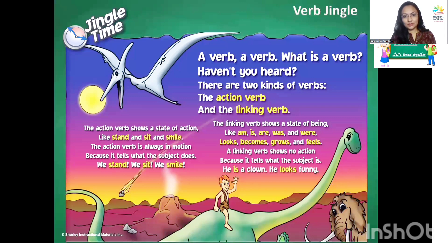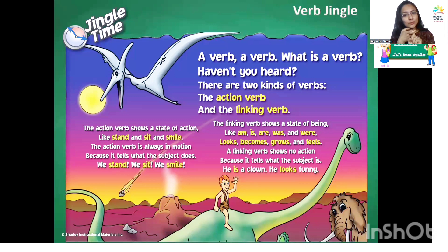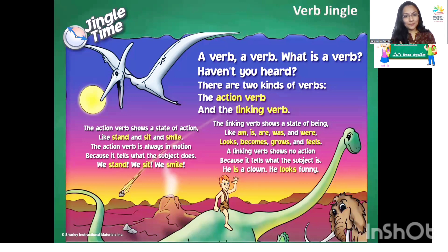A verb — what is a verb? Haven't you heard? There are two kinds of verbs: the action verb and the linking verb. So, the action verb shows a state of action, like stand, sit, smile. The action verb is always in motion because it tells what the subject does. We stand, we sit, we smile.